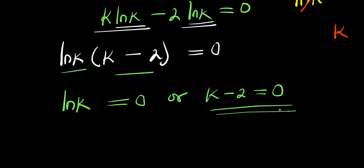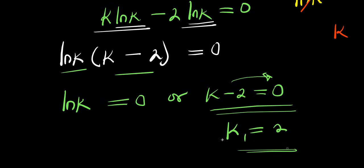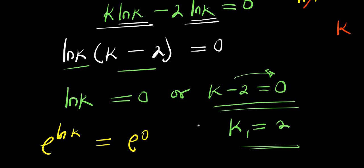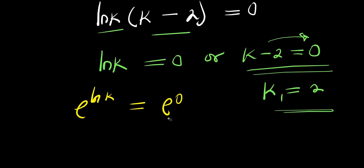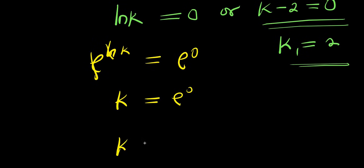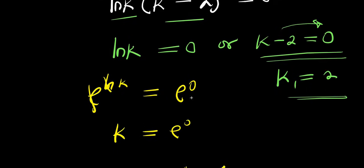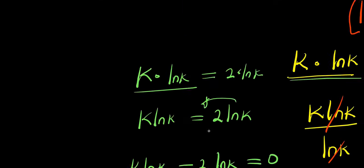Solving the linear equation k minus 2 equals 0, we move the negative 2 over and get k equals 2 — that is k₁. For the other equation, natural log of k equals 0, I take e of both sides: e to the power of ln(k) equals e to the power of 0. Since e eliminates ln, we have k equals e^0, so k equals 1. Now I have two values of k.